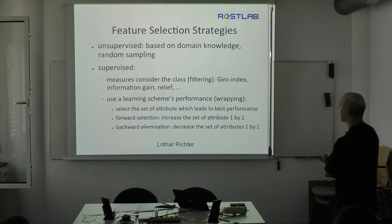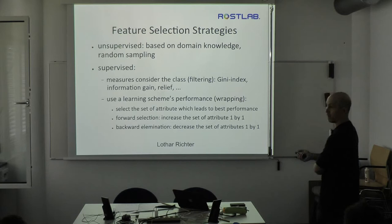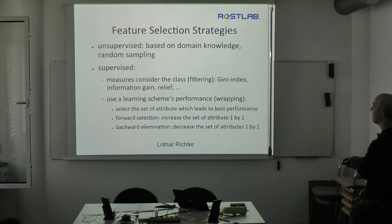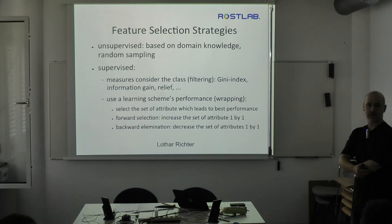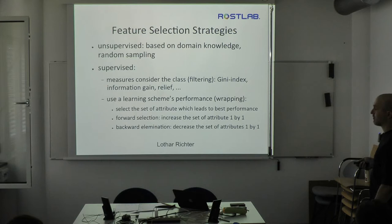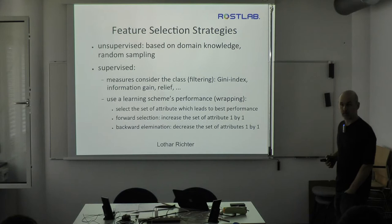In wrapping, you put each attribute into a learning algorithm and check performance instead of computing a formula. You start with the first attribute, learn a model, and determine prediction performance, then take the second attribute, and pick the one with best performance. You can increase the number of features — either up to a defined set size, or until new features no longer improve performance beyond a threshold. This is forward selection, where you increase the feature set one by one.